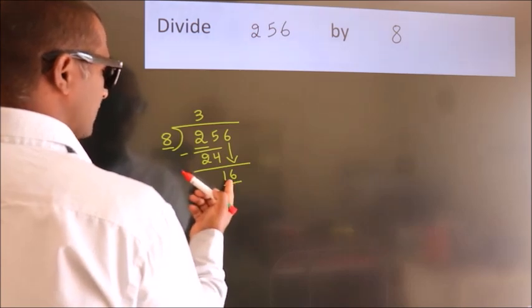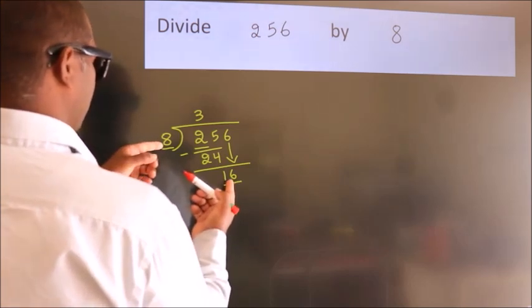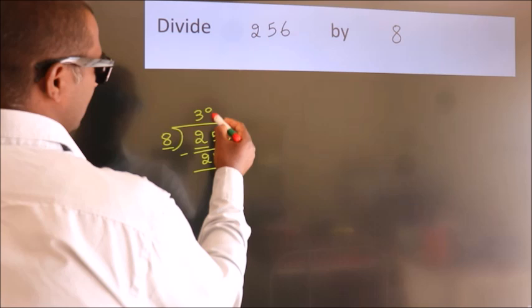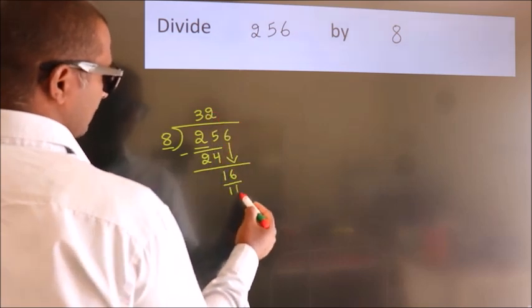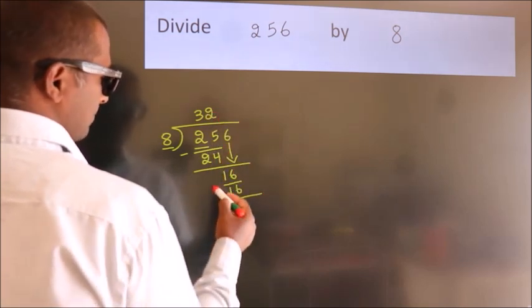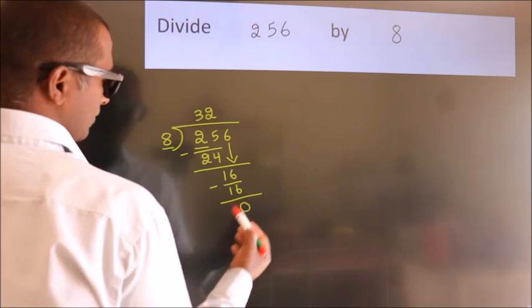When do we get 16 in the 8 table? 8 twos, 16. Now, we subtract. We get 0.